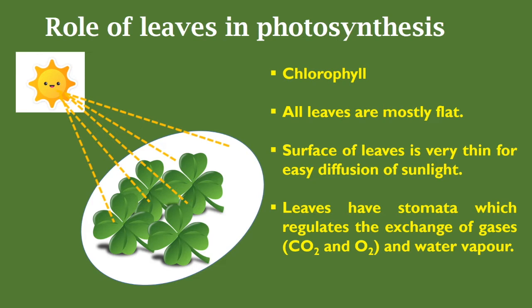The surface of a leaf is very thin for easy diffusion of sunlight. The stomata present in the leaves regulate the exchange of gases — carbon dioxide, oxygen, and water vapor — with the atmosphere.